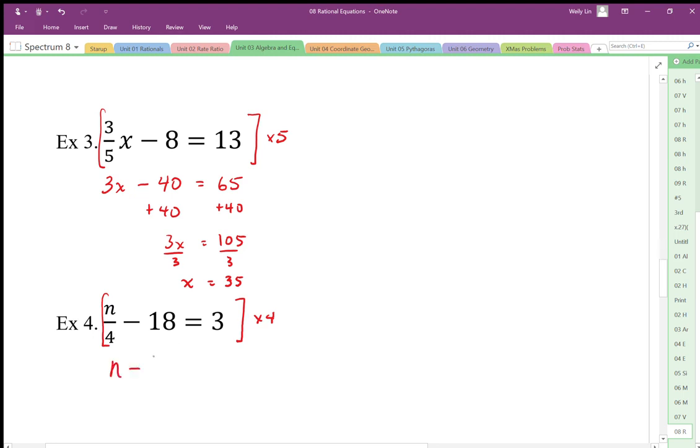4 times 18 is, what's that going to be? That's going to be 92. Okay, so that's not 92, that's 72. That's equal to 3, and then add 72 to both sides.